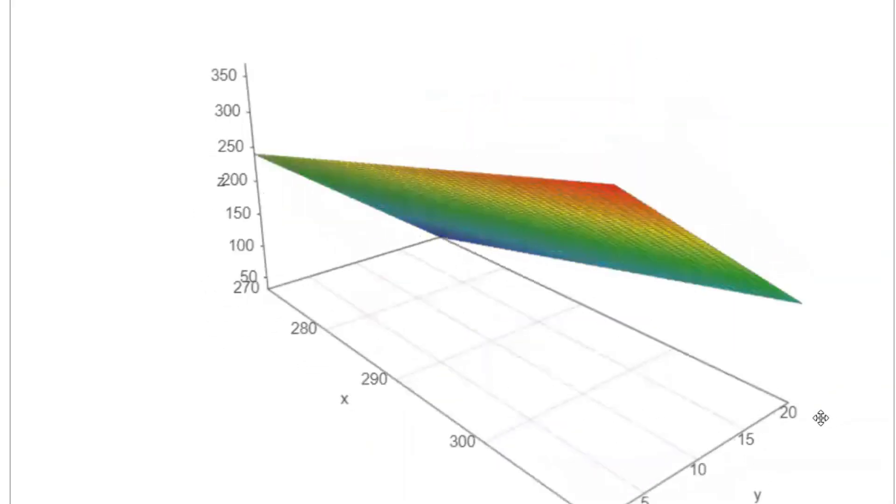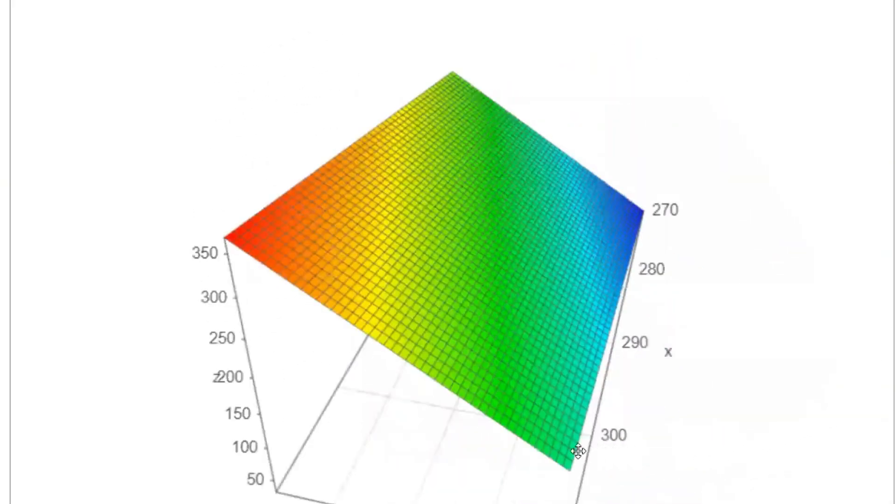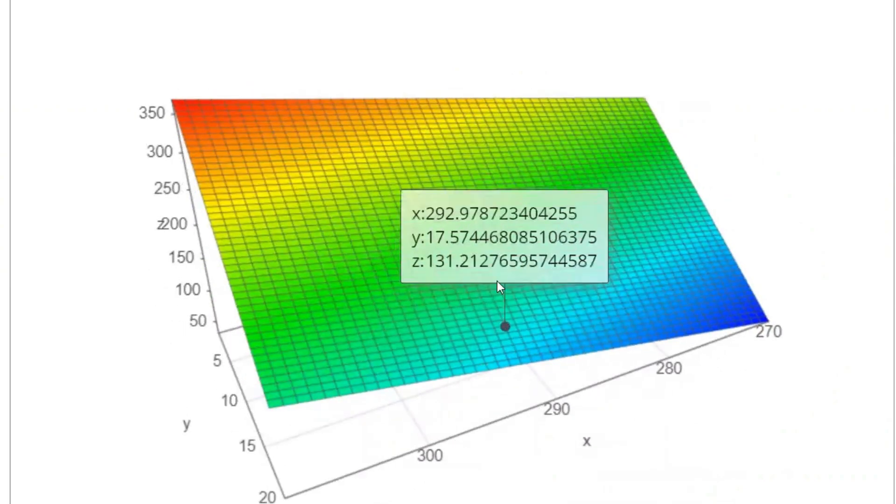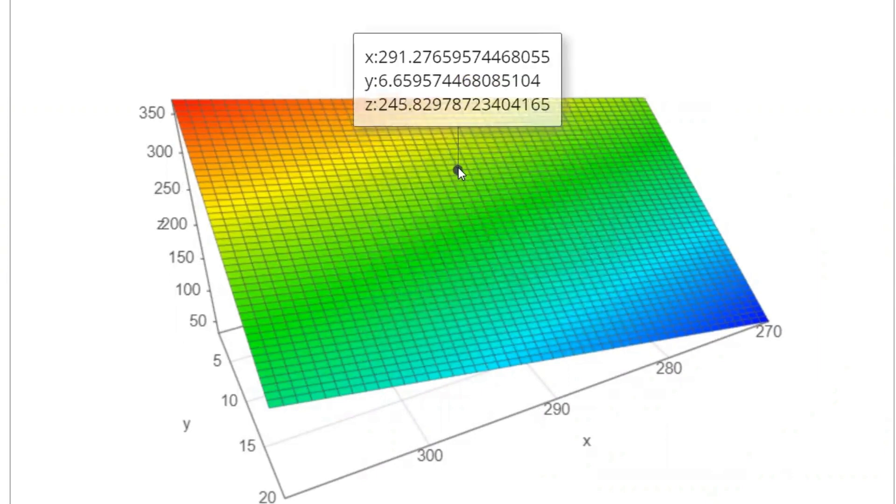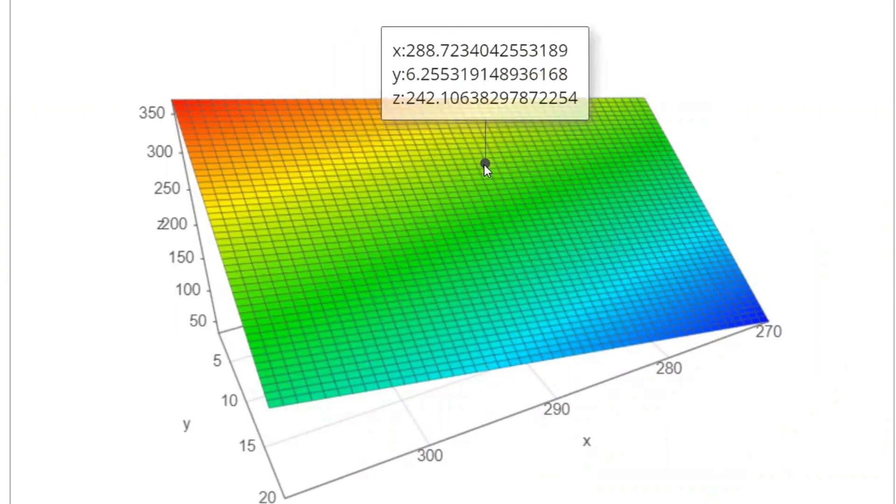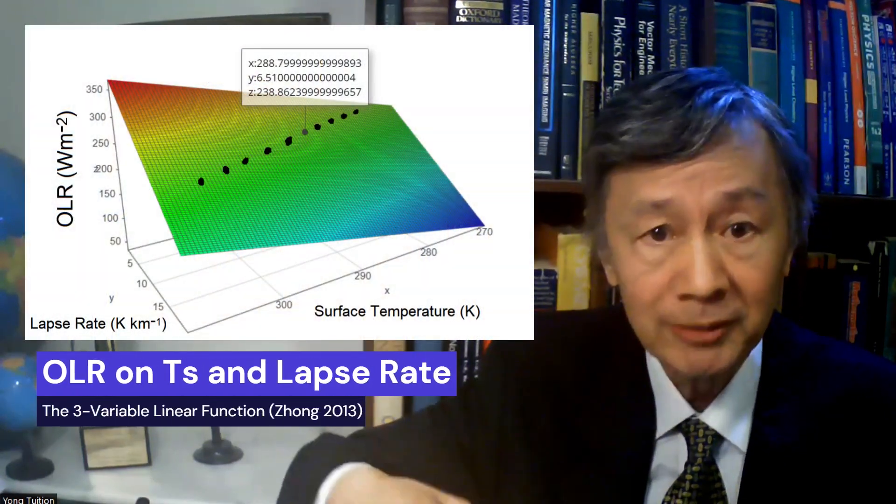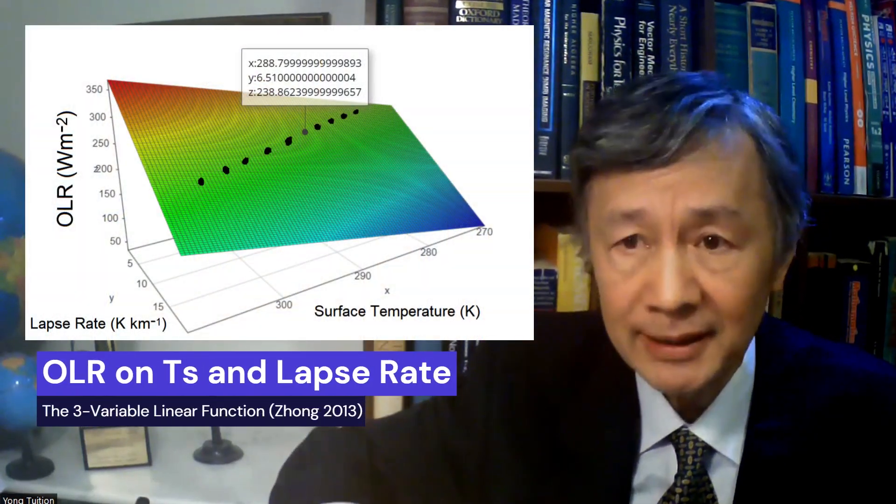As you can see, a wide range of constant OLR values can be achieved and maintained by changing the surface temperature and the lapse rate at the same time. But it would appear the value 239 W per meter square for OLR is special, or unique, for this planet.